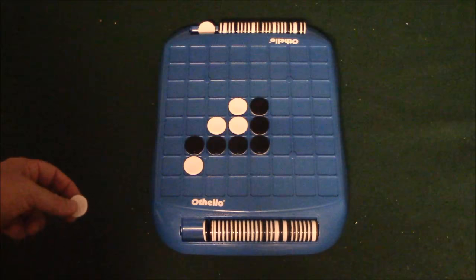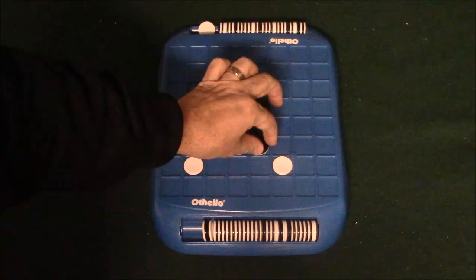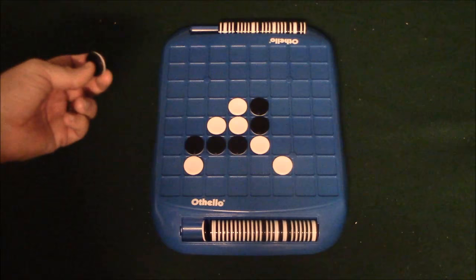Okay, so now white's up again. White decides to play... Let's put white here. And he turns over this chip. So now black goes. And this is kind of basically how the whole game works. It just works like this.